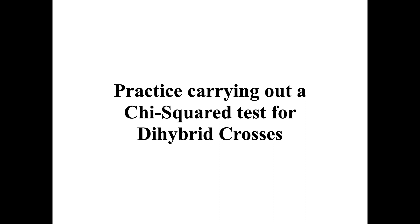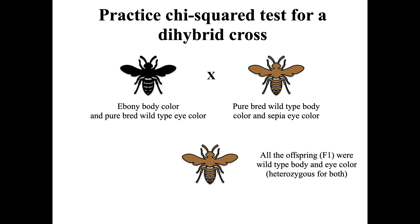After seeing the examples, it's time for you to practice carrying out a chi-squared test for a dihybrid cross. Here we have a practice chi-squared test for a dihybrid cross using fruit flies, Drosophila. There are two different body colors — wild type body color and ebony — and then wild type eye color versus sepia eye color.